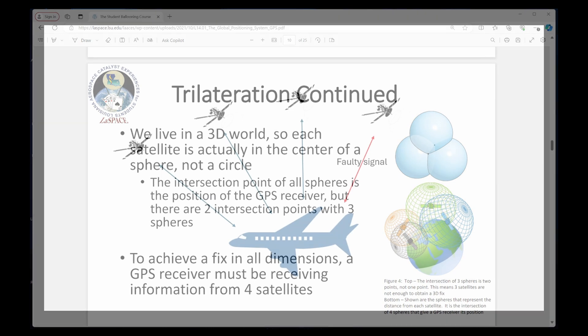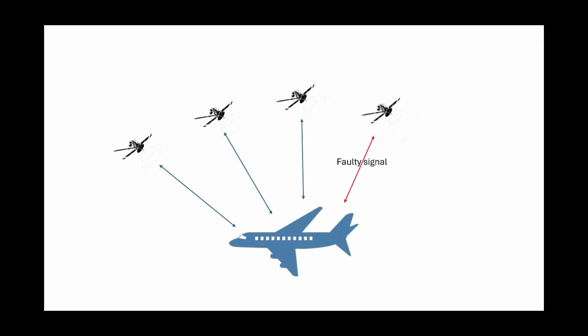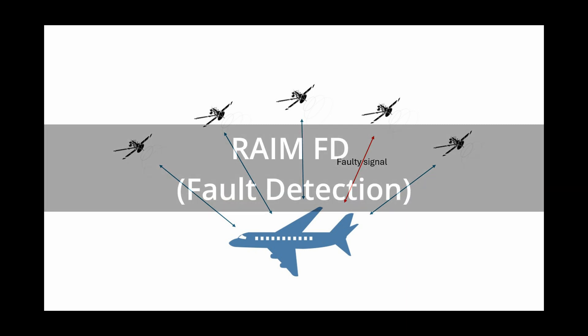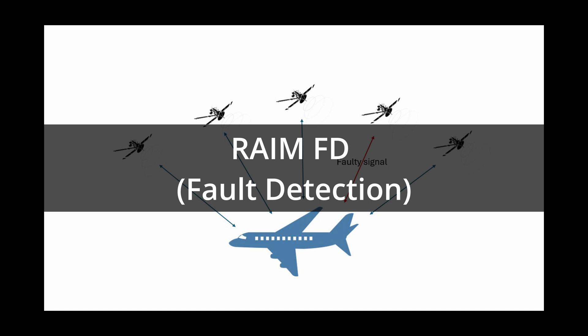What if one of the GPS satellites is sending incorrect information? There is no way for the receiver to know that, unless it is receiving a signal from a fifth satellite. In that case, the receiver can compute the location using different sets of four satellites, and if the computations don't match, then it detects there is a fault. This is called RAIM fault detection.